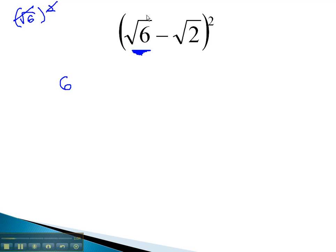In the center, we need twice the product. Root 6 times negative root 2 is negative root 12, and it is there twice. Negative 2 root 12.